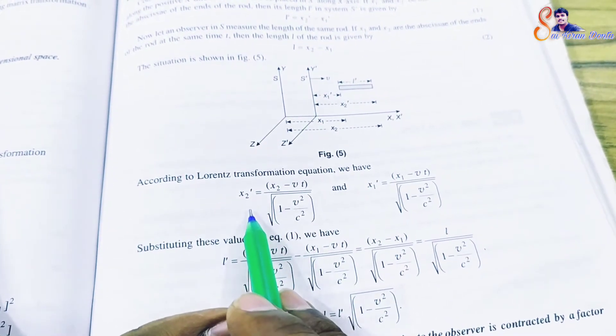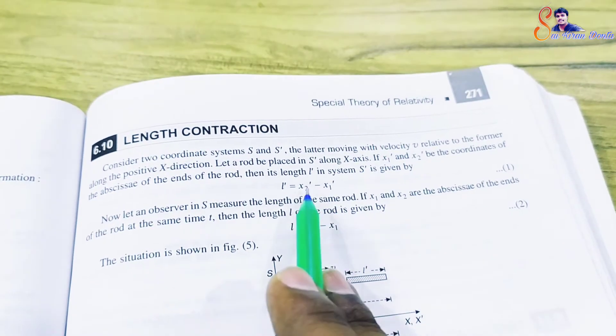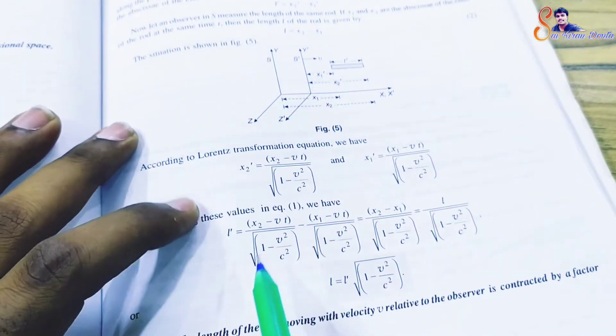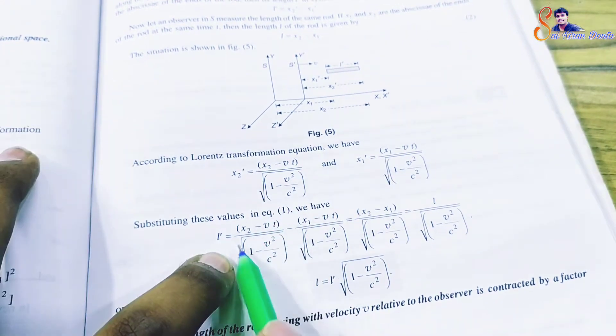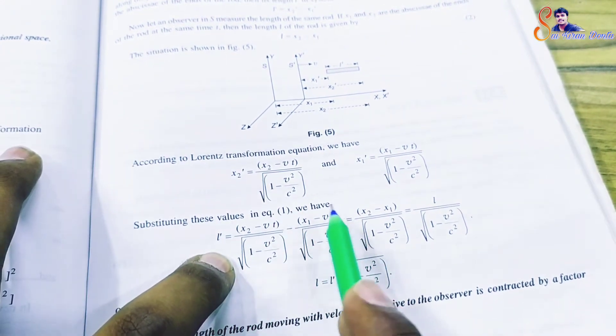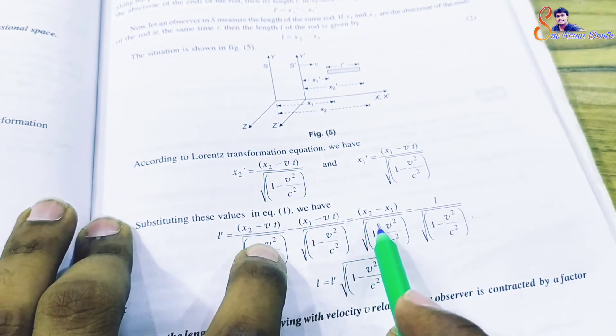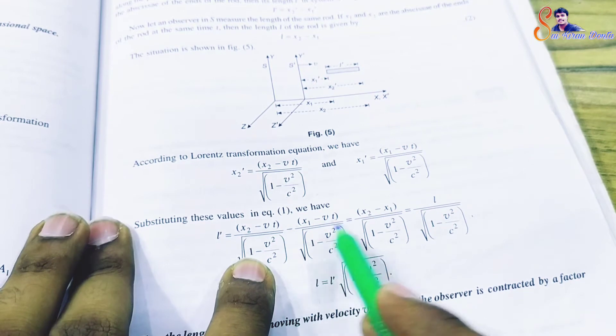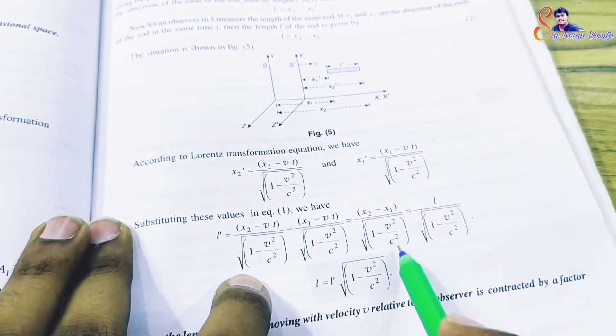Substituting these x2 dash and x1 dash values into the l dash equation, after cancellation of minus vt terms, we get l dash equals x2 minus x1 divided by square root of 1 minus v squared by c squared.